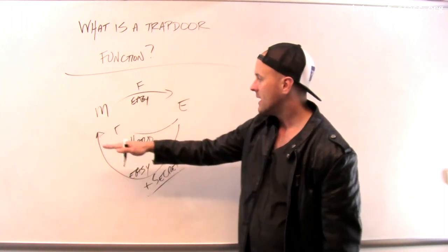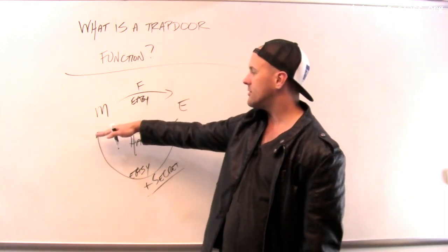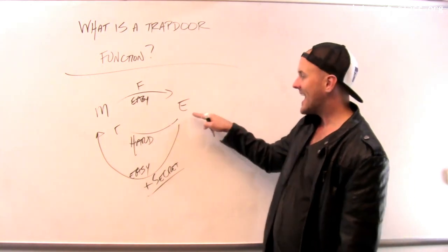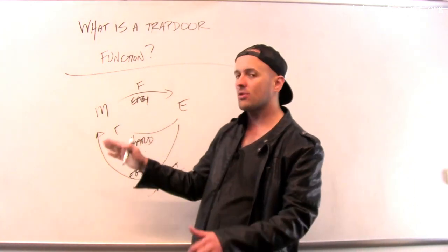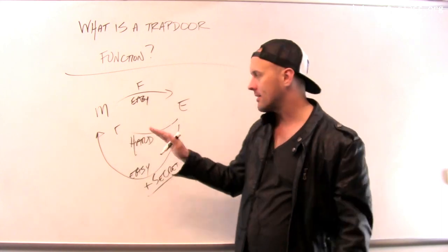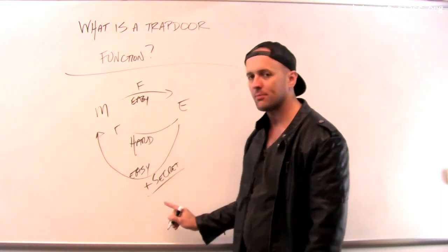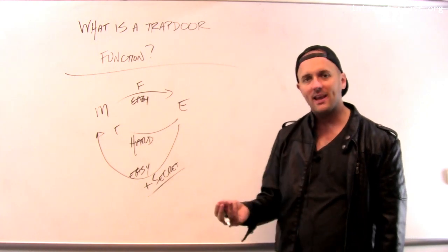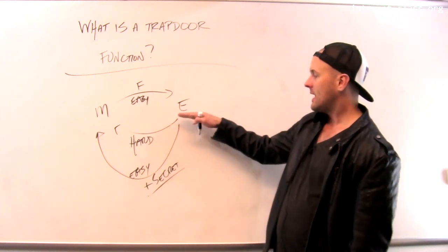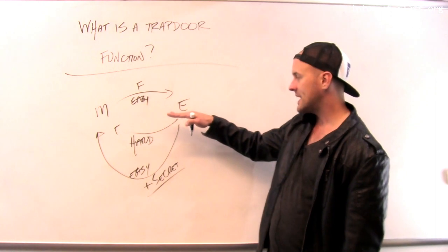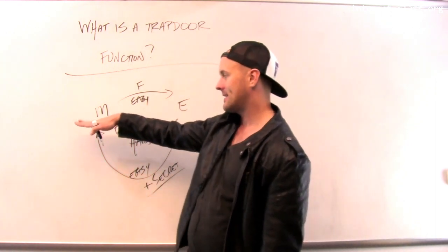So let's review. If I have M, it's very easy to apply the trapdoor function to get E. If I have E, it is impossible or at least very hard to get back to M. Except if I know this special piece of information. That secret unlocks the trapdoor and allows me to take E and get back to M.